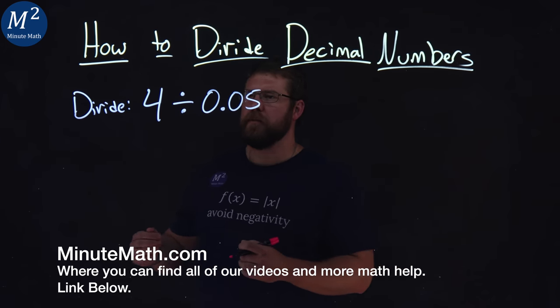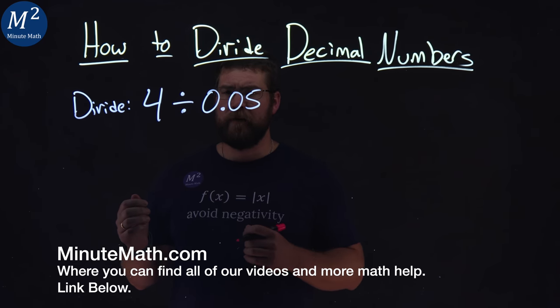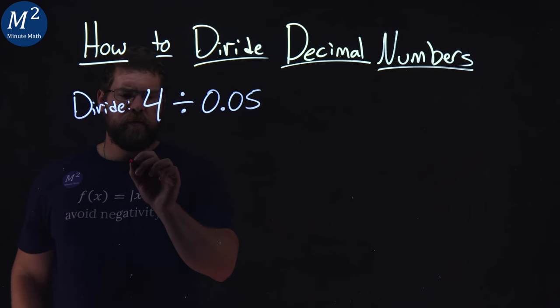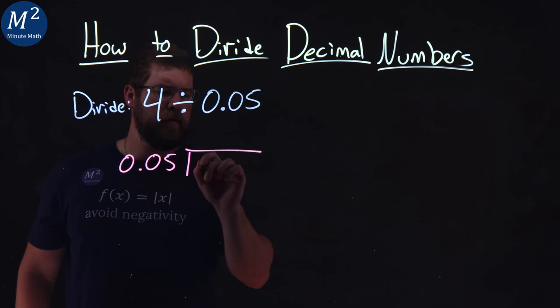We're given this problem right here. Divide 4 divided by 0.05. All right. Well, I first want to write this in long division form. 0.05 divided by 4.